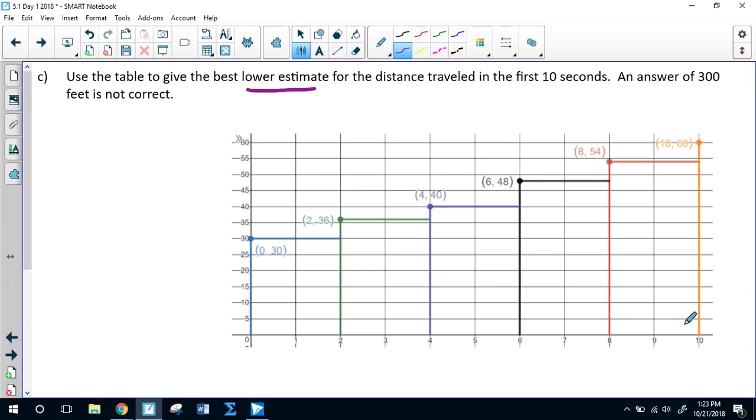So all of these have equal time intervals of two, so they're all going to be multiplied by two. So this one is 30 times two, 36 times two, 40 times two, 48 times two, and 54 times two. And notice that we're not using the 60 because that value is an upper value, so we're not using that. So you're going to multiply all these by two, or you could add all of the numbers, the 30, 36, 40, 48, and 54 together, and then multiply the whole thing by two. But either way, what you get when you add it all up is 416 feet.